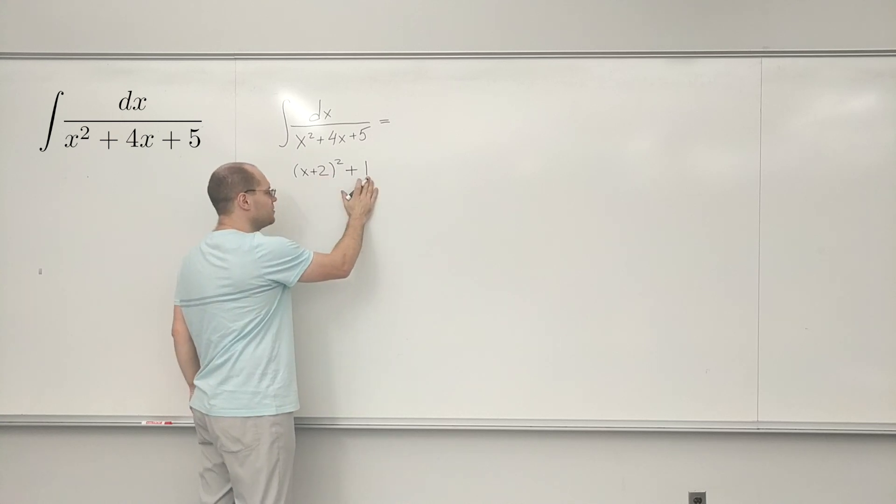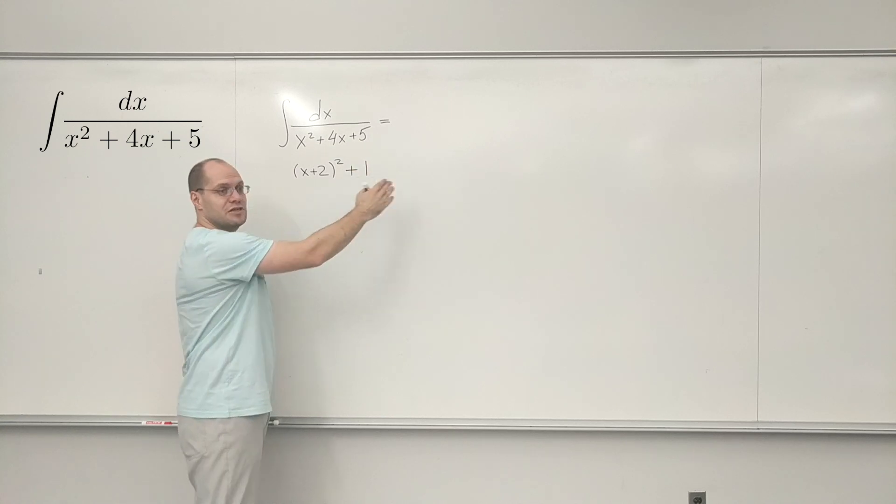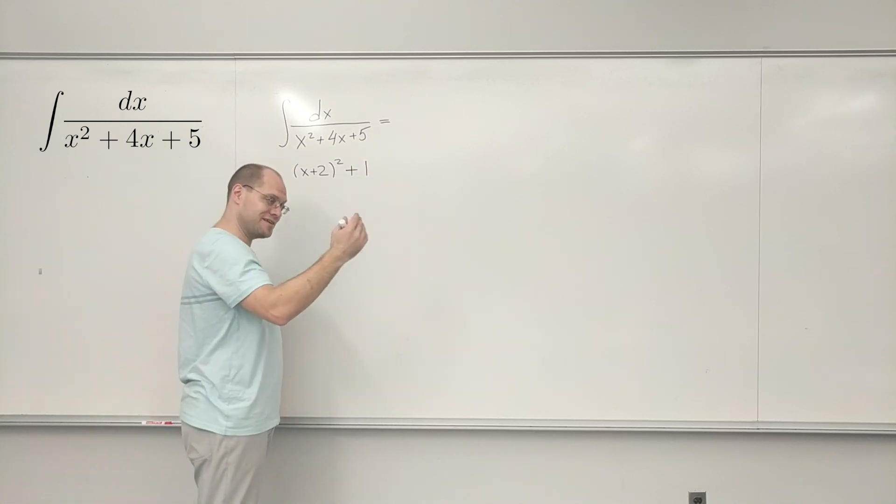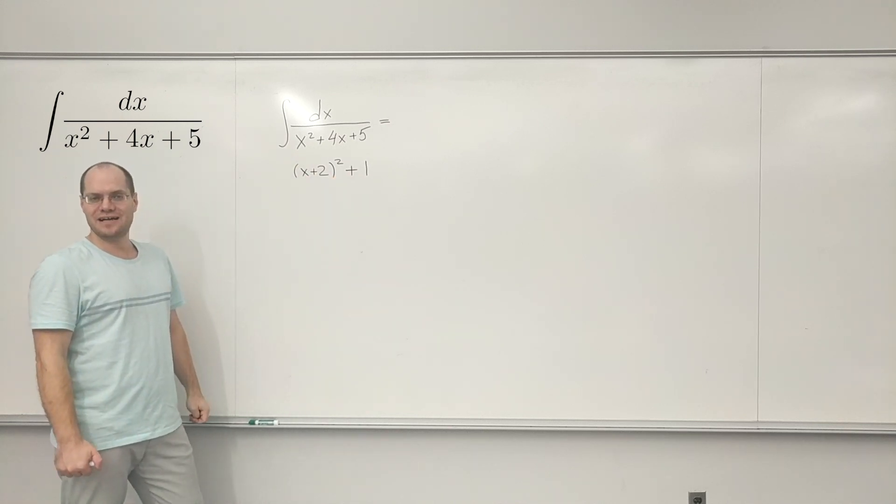So it's a sum of two squares, cannot be 0. And if a polynomial cannot be 0, it cannot be factored. Because if it can be factored, then it has roots and then it can be 0. So this cannot be 0, therefore cannot be factored.